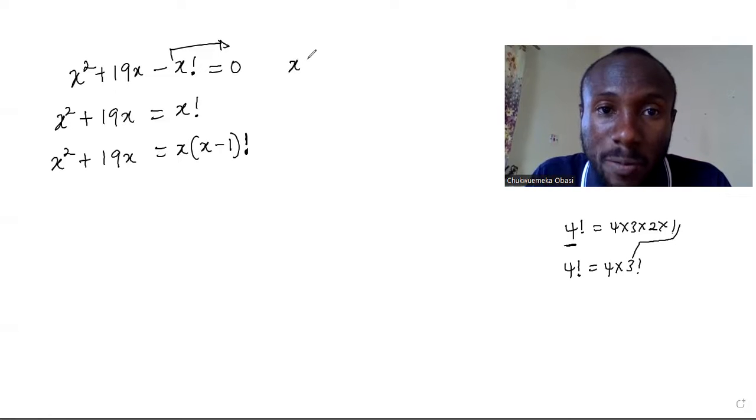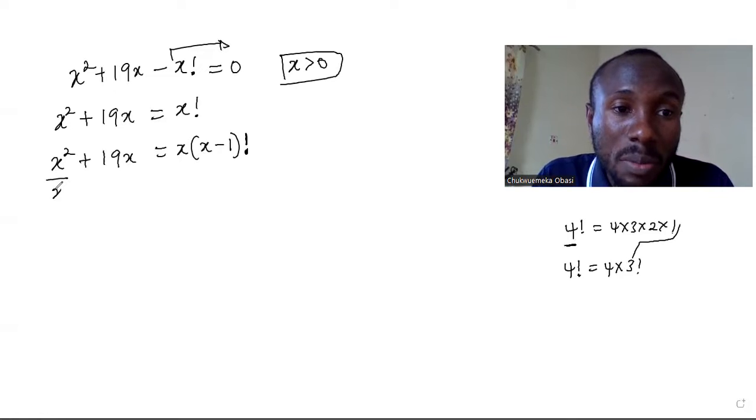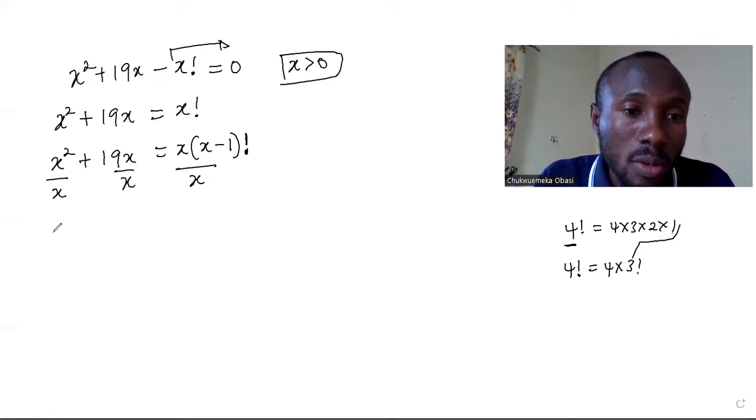So because of this condition, I can divide everybody by x. I'll divide here by x and I'll divide here by x.